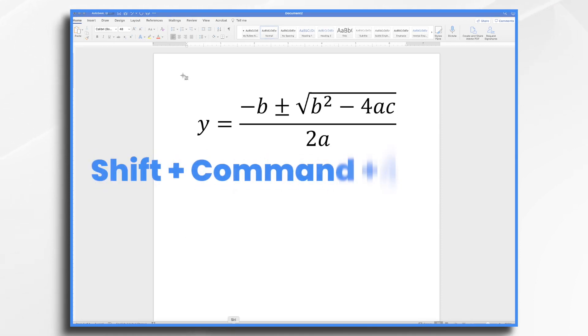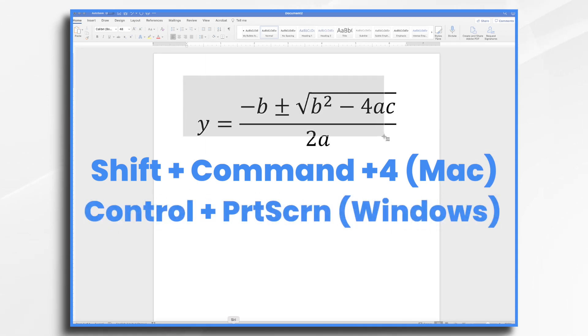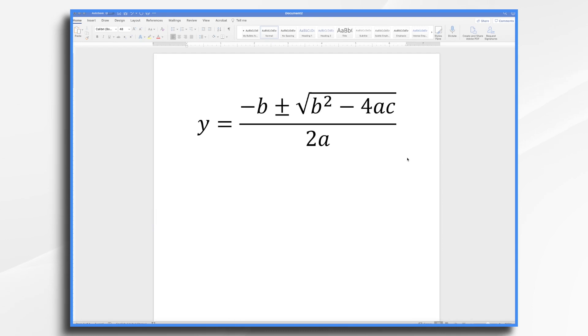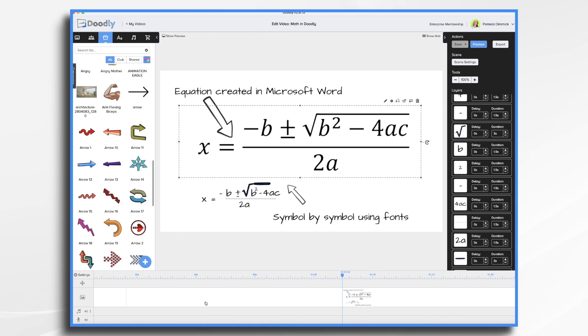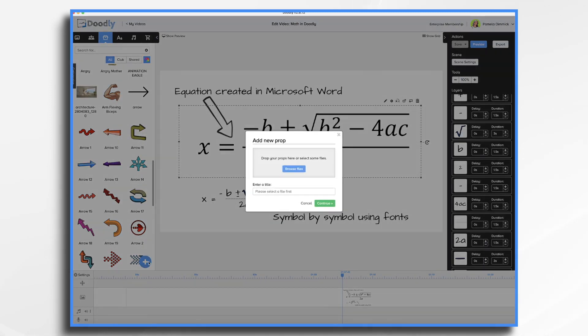So on a Mac, I just pressed Shift Command 4. I'm going to select the equation, and my system just took a screenshot. Now I can go back into Doodly, go to my props tab, click the blue plus sign, and browse for my files.